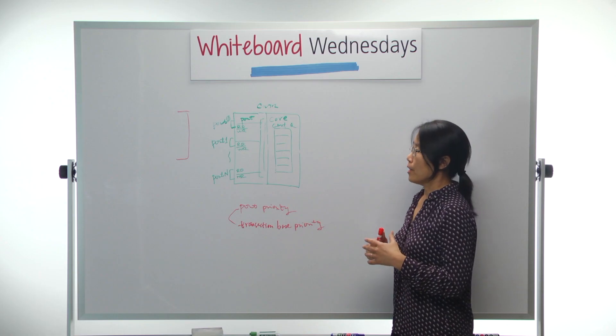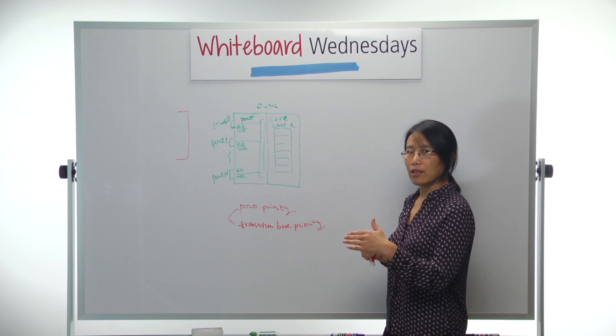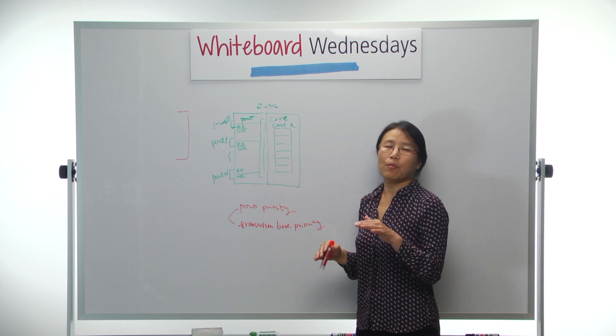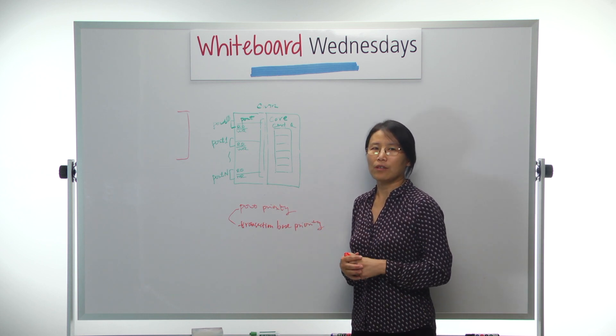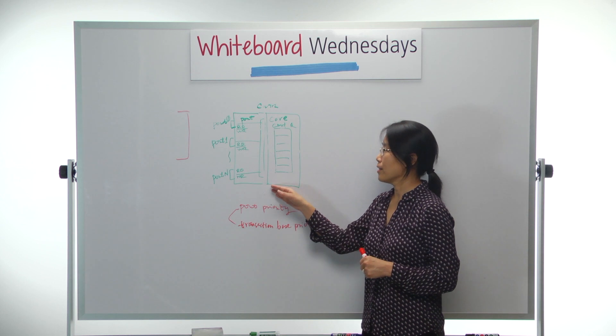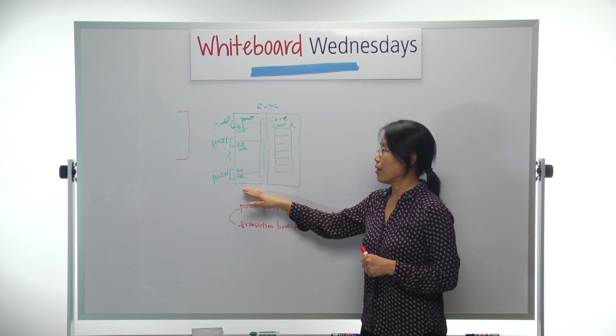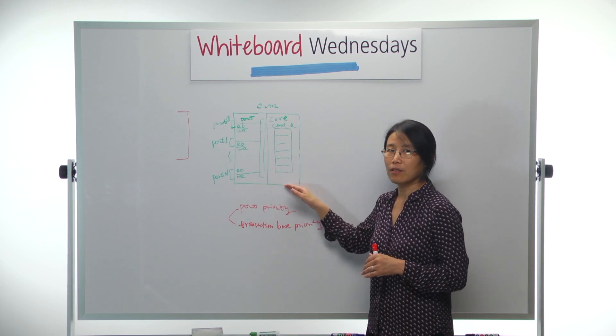So if that limit is reached, the arbitration logic will stop to consider that port from arbitration, so the lower priority command in other ports can be considered.